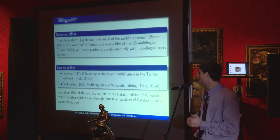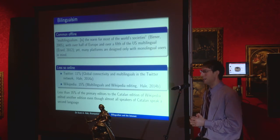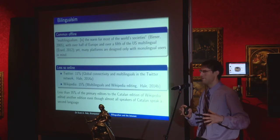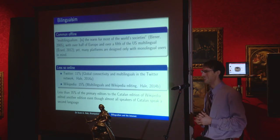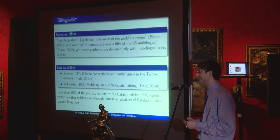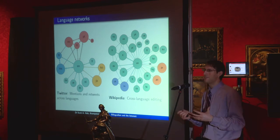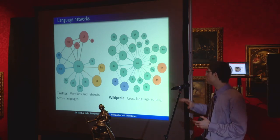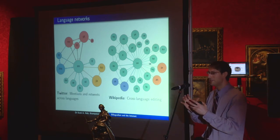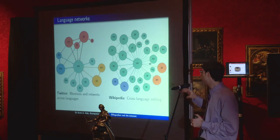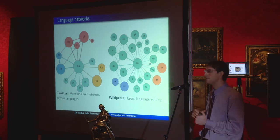Even somewhere like the Catalan edition of Wikipedia — 35% of the people who edit that edition also edit a second language edition, meaning 65% only edit the Catalan edition, even though we know there are high rates of bilingualism among Catalan speakers who likely speak at least a second language. We can map out these languages and see how they connect. English is a very central language in that network, but there are also regional connections — language groups in close proximity or sharing common structure, such as the Romance languages, which have a number of bilingual contributors connecting them.